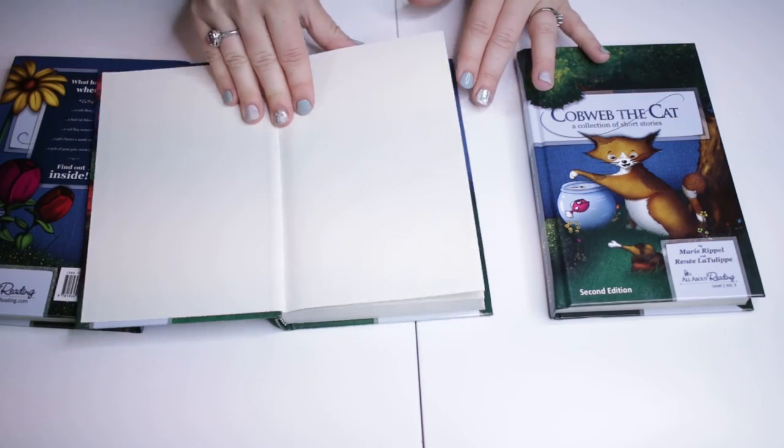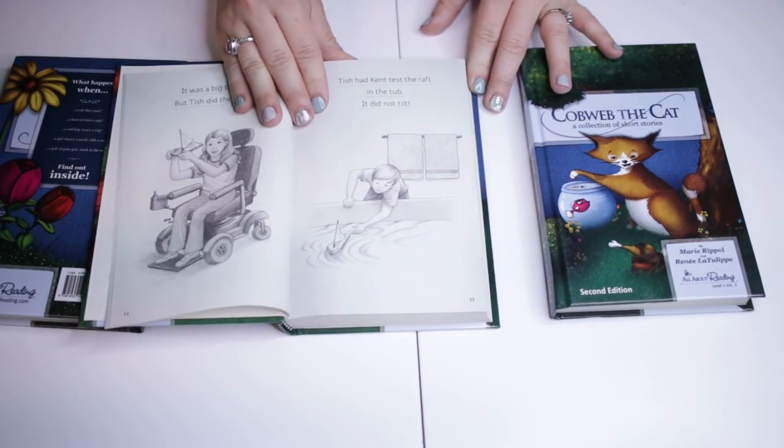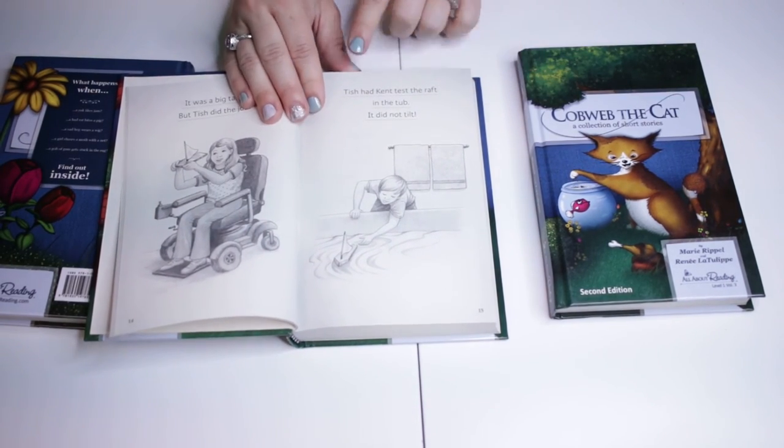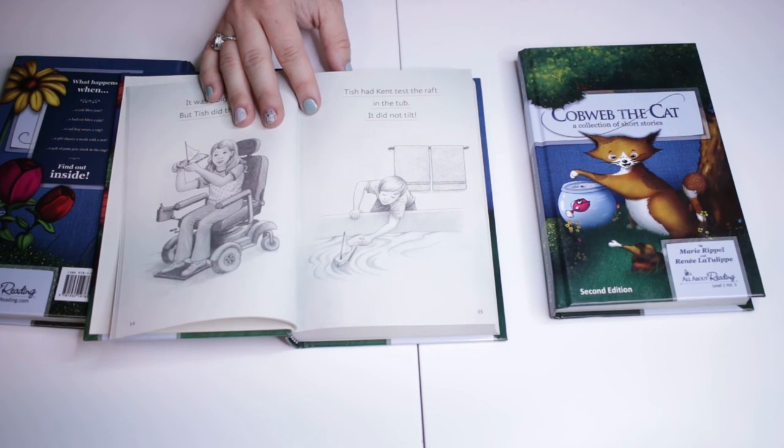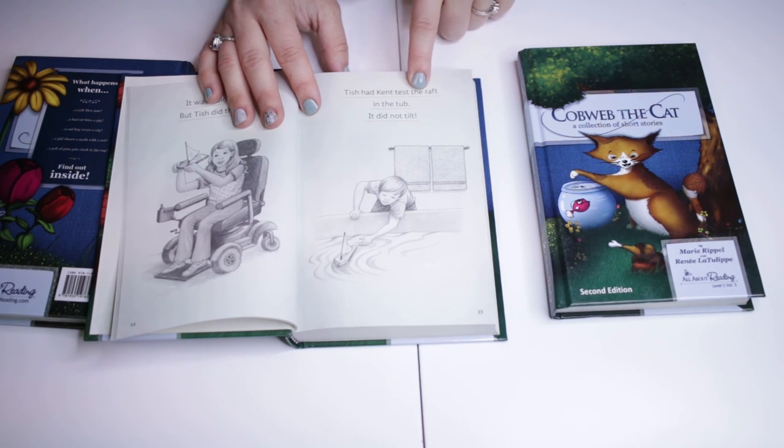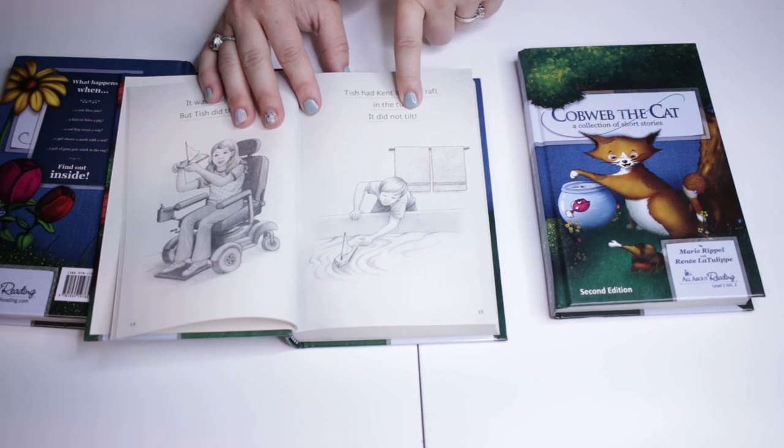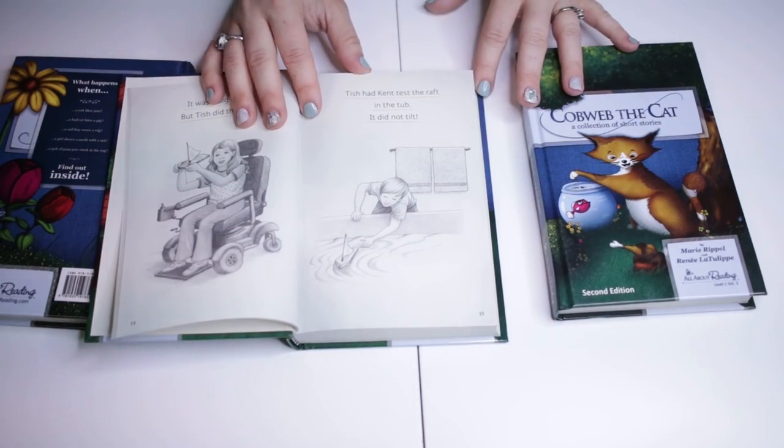So you keep going through and the reading keeps adding up with new sounds and more complicated words. By the second book we're looking at bigger sentences. So this one says, Tish had Kent test the raft in the tub, it did not tilt.